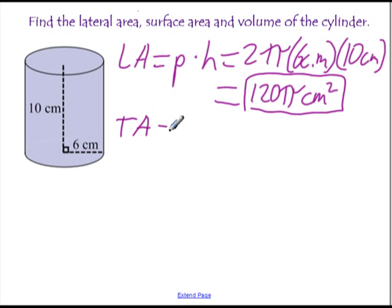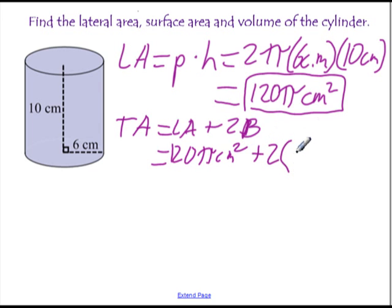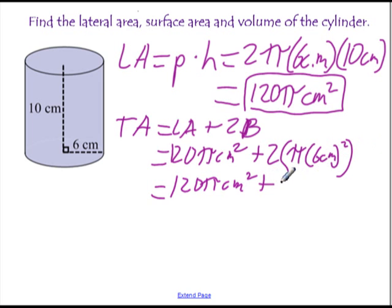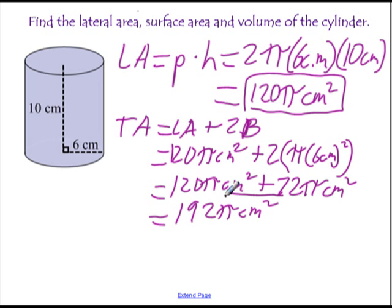The total area or the surface area, or the total surface area, you can call it whatever you like, is the lateral area plus twice the area of the two bases. The lateral area, we already know, is 120 pi square centimeters, plus twice the area of the base. Well, the area of the base is pi times 6 centimeters squared. Pi r squared, because it's the area of the circle. And so if we simplify all that, we get 120 pi square centimeters, plus order of operations, do the exponents first. 6 squared is 36, times 2 is 72, so we get 72 pi square centimeters. And then add those together to get 192 pi centimeters squared. And that is your total area.